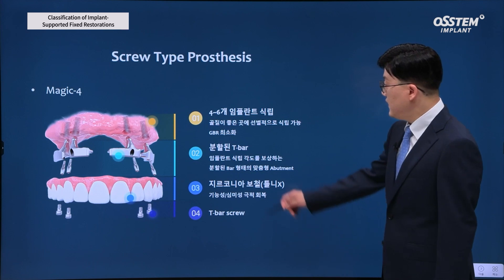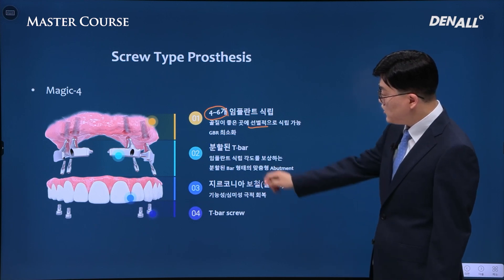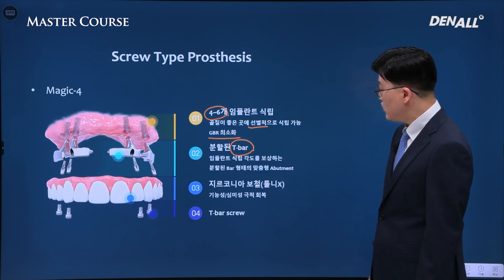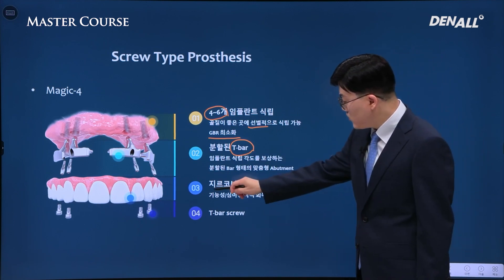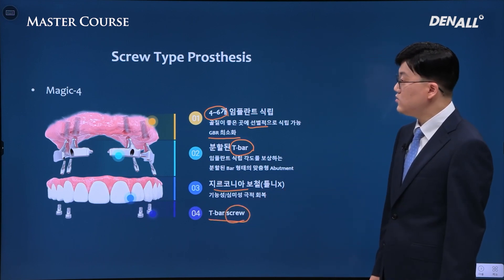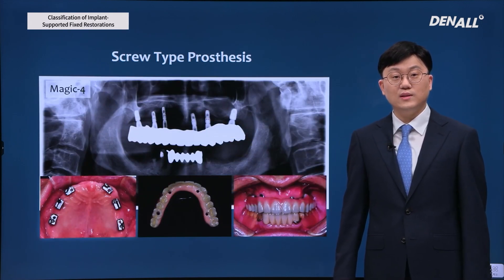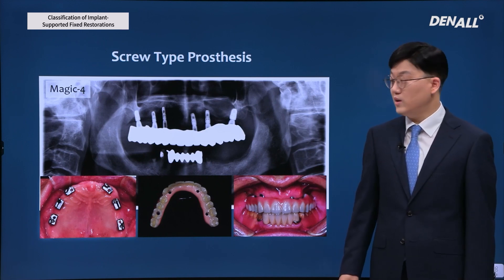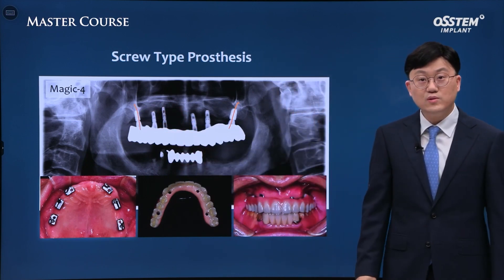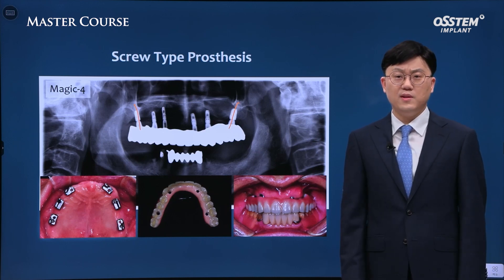Austin also provides a magic force system. You can selectively place 4 to 6 implants in areas with good bone quality, GBR can be minimized, and if you use a divided T-bar, placement angle can be compensated for. Zirconia prosthesis can be utilized, and using a T-bar screw, you can fabricate screw type prosthesis. If you use Magic 4, implants can be placed where bone conditions are more favorable, and you can tie prosthesis with different angles in one piece, providing screw type prosthesis while gaining retrievability.